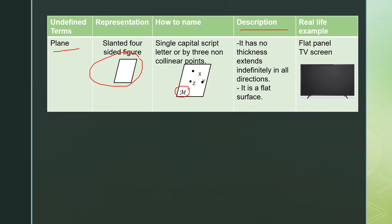For the description of the plane, it has no thickness but extends indefinitely in all directions — up, down, and to all sides. It is a flat surface. A real-life example of a plane is a flat panel such as a TV screen, which is a flat surface.